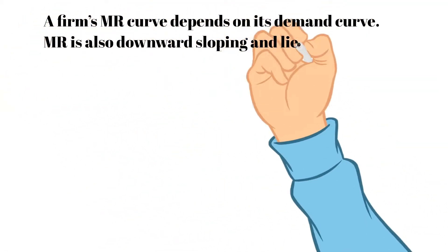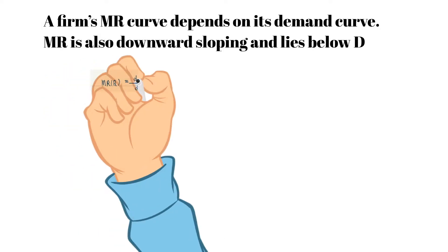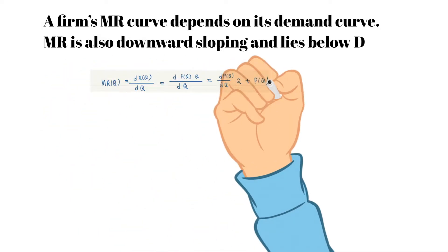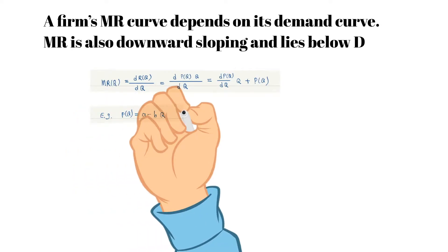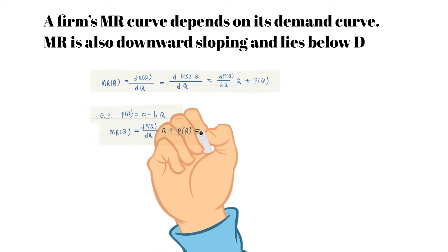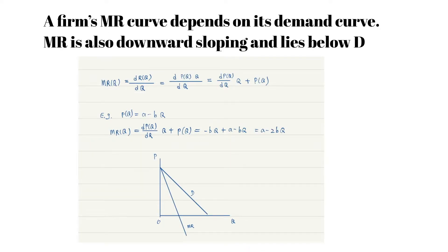A firm's marginal revenue curve depends on the demand curve it faces. A monopoly's marginal revenue curve is downward sloping and lies below its demand curve at any positive quantity because its demand curve is downward sloping. Using the product rule of differentiation, we can write the monopoly's marginal revenue function with two terms.